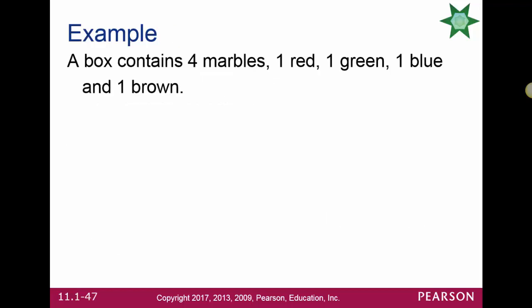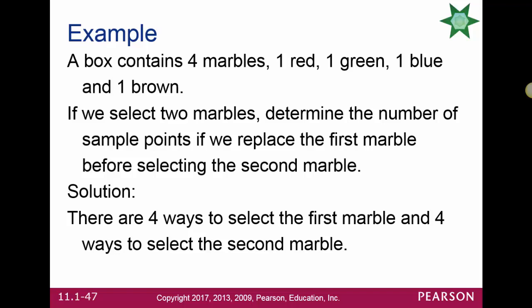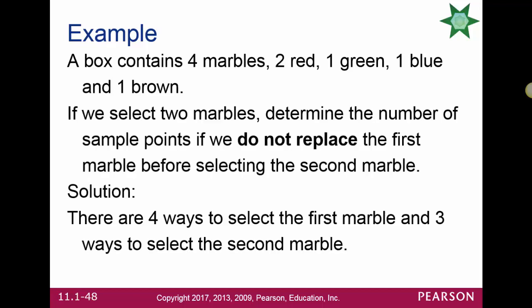A box contains four marbles: one red, one blue, one brown, and one green. If we select two and replace the first marble before selecting the second, there are 4 × 4 = 16 different outcomes in the sample space. If we don't replace after the first draw, we have 4 selections for the first marble but only 3 for the second, giving 12 sample points.